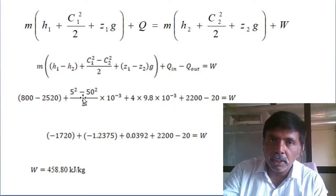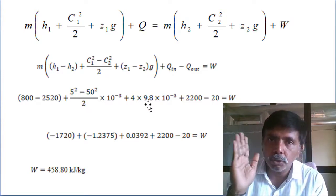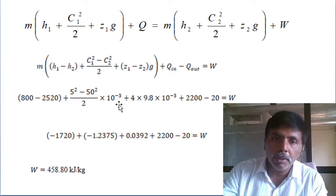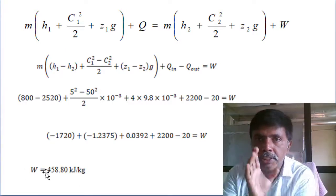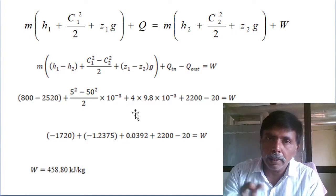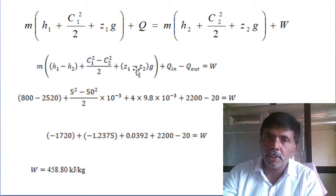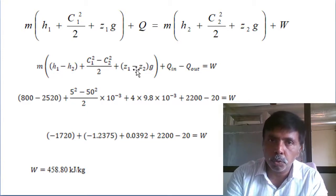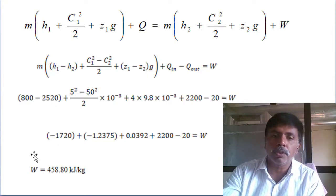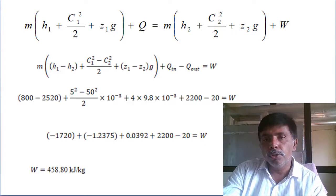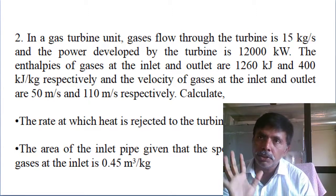Always convert kinetic energy and potential energy to kilo joules, because velocity is always given in meters per second, not kilometers. Divide by 1000 to get kilo joules. For a turbine, the net work done should come out positive — if it's not positive, the calculation is wrong. The kinetic and potential energy must be in kilo joules to match enthalpy and heat, which are also in kilo joules. The work done comes out to 458.80 kilo joules per kg.